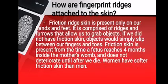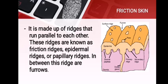Friction ridge skin is present only on our hands and feet. It is comprised of ridges and furrows that allow us to grab objects. If we did not have friction skin, objects would simply slip between our fingers and toes. Friction skin is present from the time of the fetus — ridge formation inside the mother's womb — and does not deteriorate until after we die. Women have softer friction skin than men. Friction skin is made up of ridges running parallel to each other, known as friction ridges, epidermal ridges, or papillary ridges, with furrows in between.